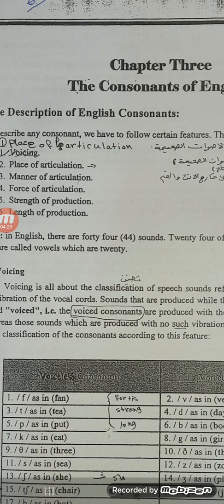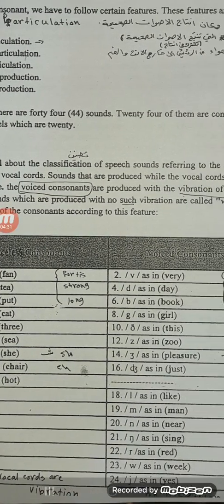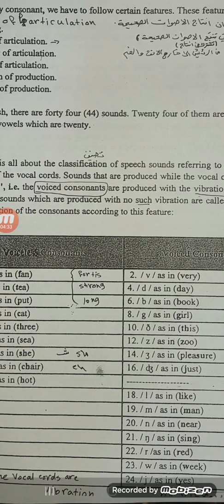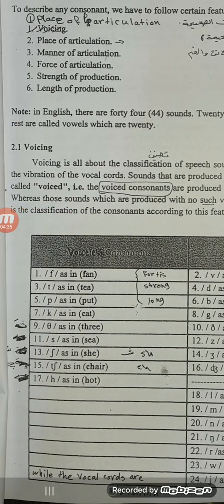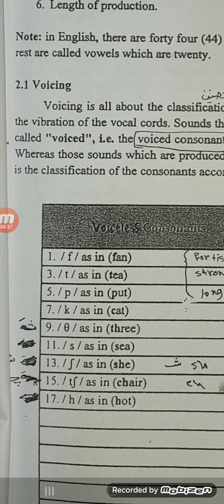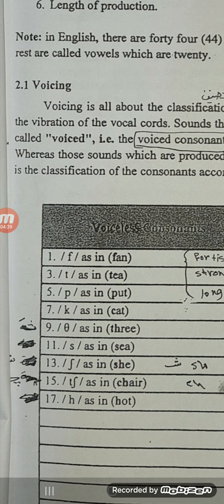These are 24 sounds we have here, voiceless. FH, this is FH like fan. TH. If you concentrate on the pronunciation, through the pronunciation of this sound there is no vibration in the vocal cord.